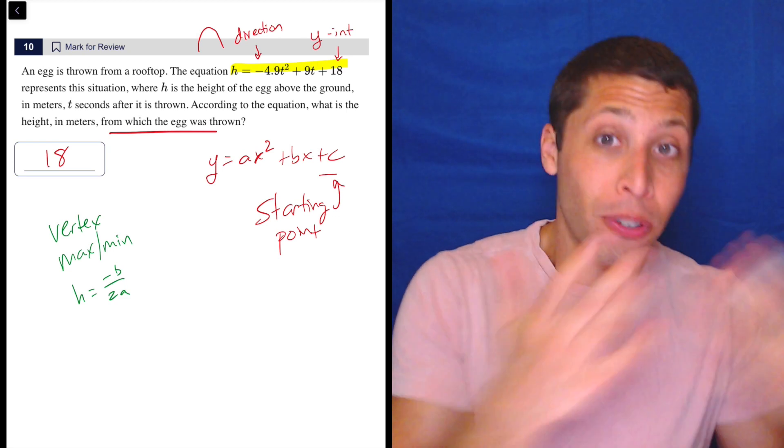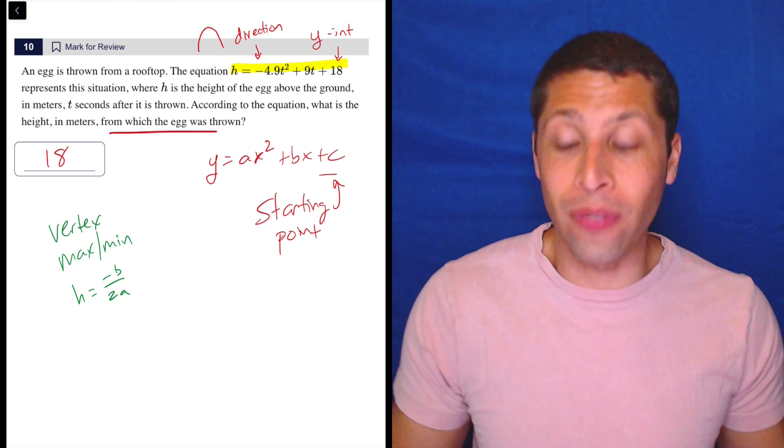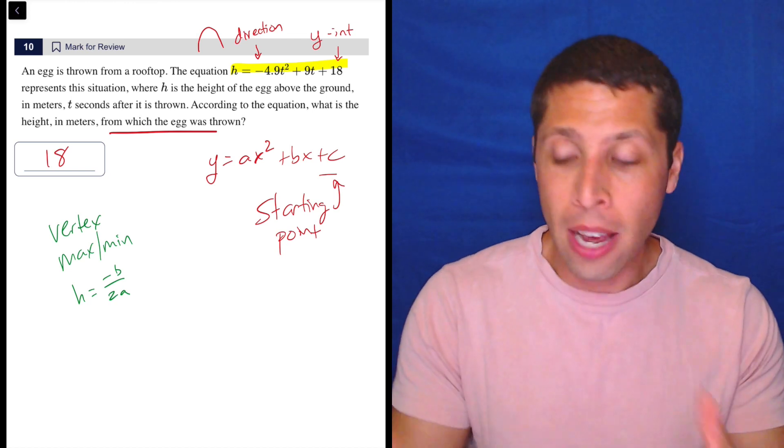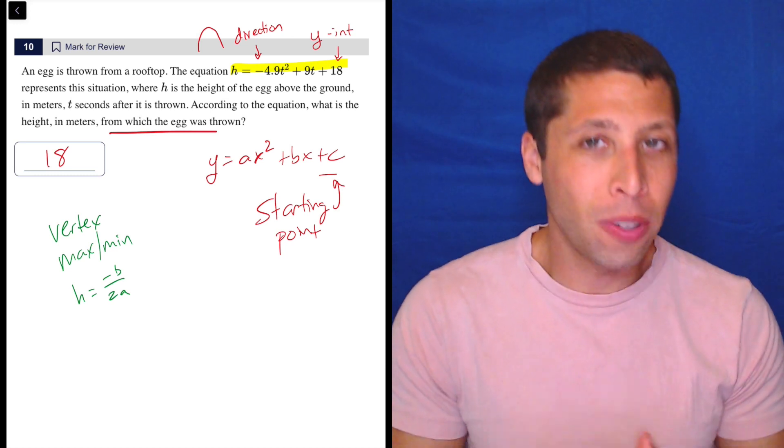So, a harder version of this question could give us the standard form and ask us to find the vertex. Or, it could have given us the vertex form and just told us to find the vertex, in which case it would have been as simple as this one was. Just pulling the right numbers out of the equation.